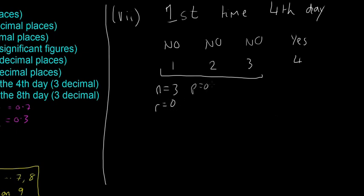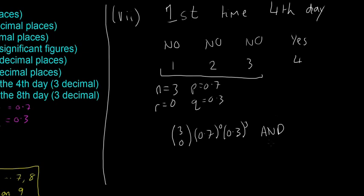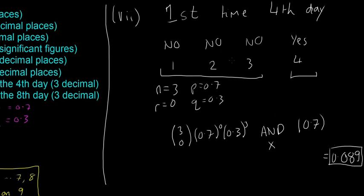For the first three days: n = 3, r = 0, p = 0.7, q = 0.3. That gives us (3 choose 0) × 0.7⁰ × 0.3³. Then the probability of having potatoes on the fourth day is just 0.7. Multiplying the Bernoulli result by 0.7 gives an answer of 0.089. So the trick is splitting the problem into two separate trials and multiplying them.